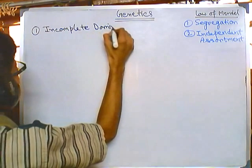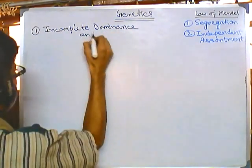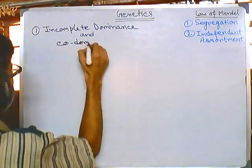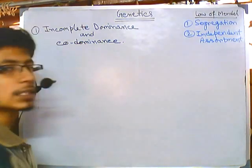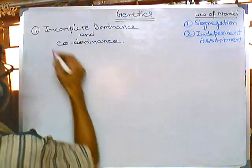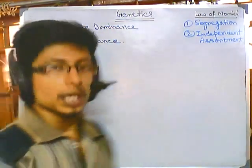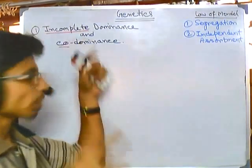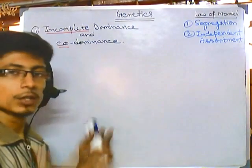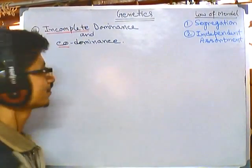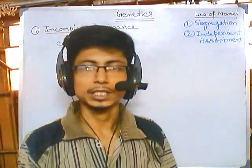These terms are self-explanatory. Incomplete dominance means the dominant pattern is not completely achieved. Codominance means dominant patterns are achieved in all ways. Remember, we are calling all these things non-Mendelian inheritance patterns because they are not following the Mendelian way of inheritance.